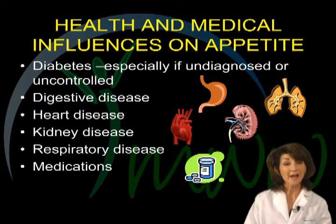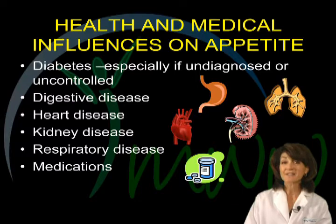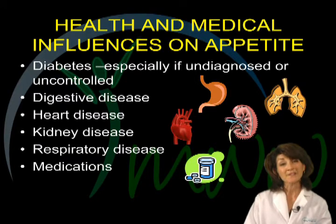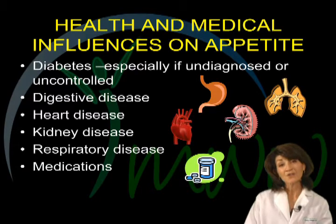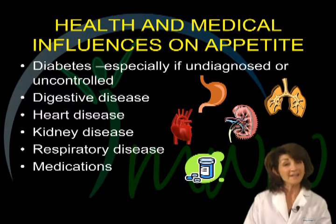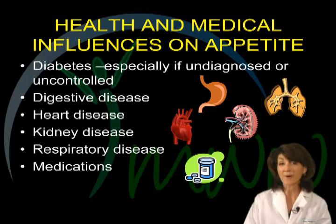Health and medical influences on appetite are important to be aware of. Diabetes, especially if undiagnosed or uncontrolled, can often greatly increase feelings of hunger because of unhealthy changes in metabolism. At the same time, poorly controlled diabetes can also cause physical changes that result in nausea and poor appetite. Digestive diseases, as well as heart, kidney, and respiratory diseases, can also play a large role in feelings of hunger. So if you are suspecting that you have any related conditions or are being treated for any of them, be sure to discuss changes in appetite with your physician. Also, medications — both prescription and over-the-counter — can also affect appetite and the way your body uses nutrients.